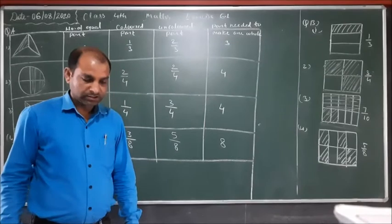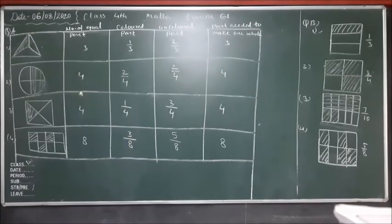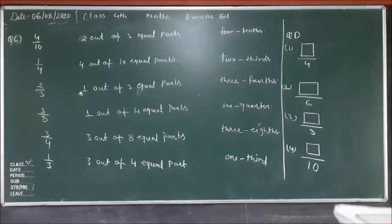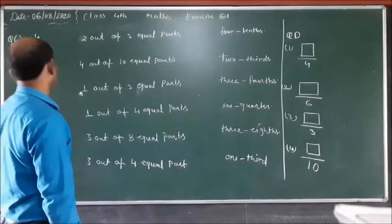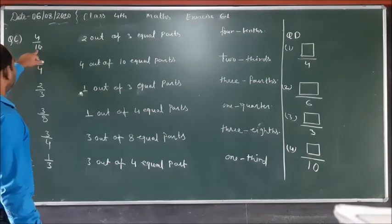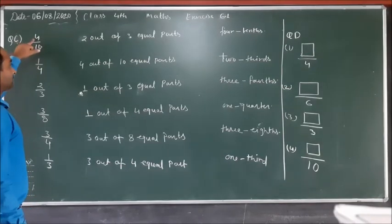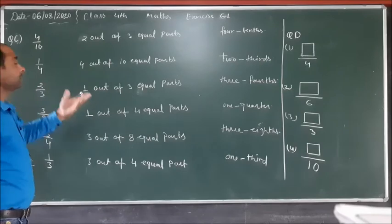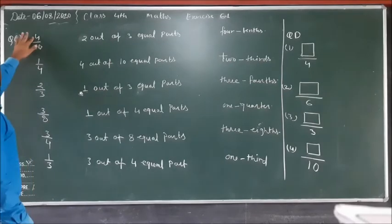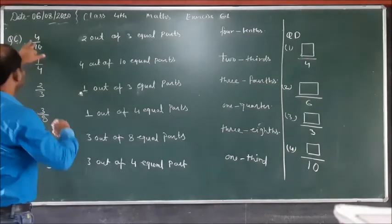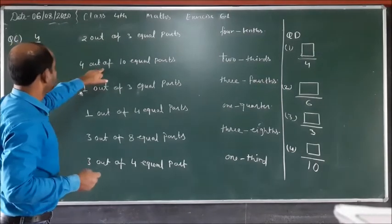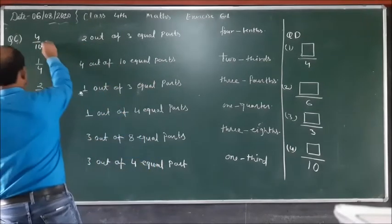Now question C: Match the column. The first question is four upon ten. Four upon ten means four out of ten equal parts. So four upon ten means four out of ten equal parts.